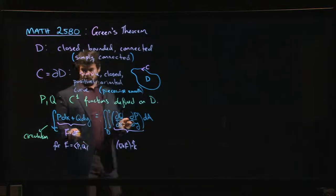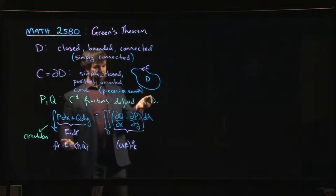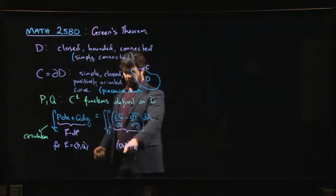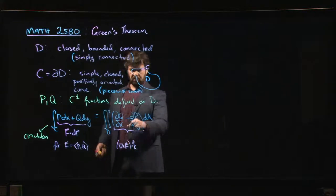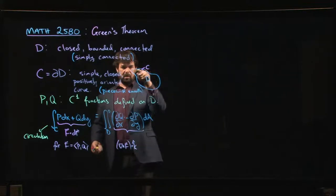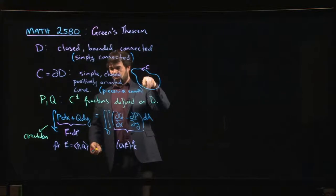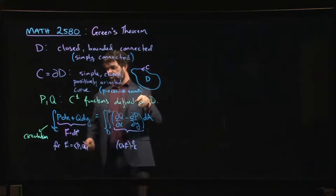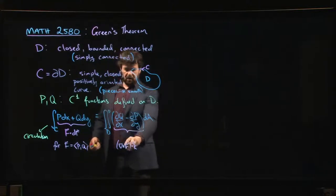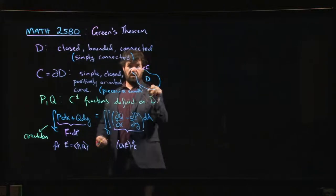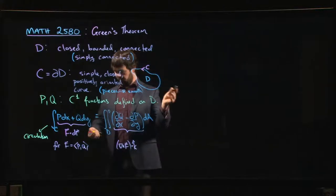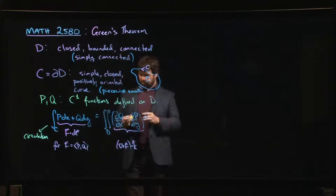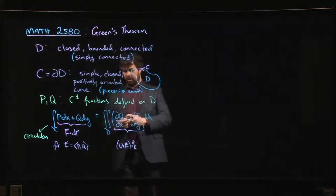Line integrals around a closed curve are called circulation, and notice we do have this connection with curl. Remember we talked about curl as telling you something about rotational potential for your vector field. You see that here. If you have a non-zero curl, that means there's something going to go around your closed curve.